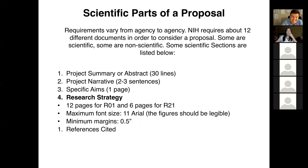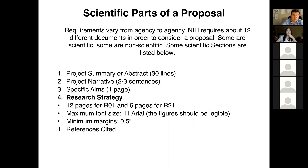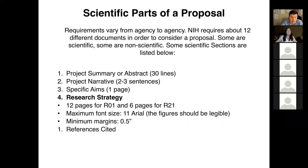Research strategy is the next big document on our list. For a typical NIH proposal, called R01, the research strategy is limited to 12 pages — quite a significant write-up. For a smaller or exploratory NIH proposal, typically called R21, the research strategy is limited to six pages. Everything is basically scaled back. The minimum font size requirement is size 11.